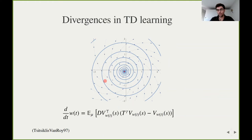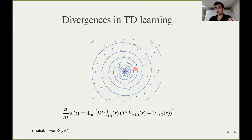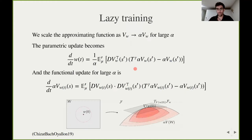In this example the state space has size two, so functions are two-dimensional vectors, and the update of the functional temporal difference learning algorithm is this spiral which contracts to a fixed point. However, if we use a parametric family of approximators that is highly nonlinear, like this spiral, we have to project the update onto the spiral, and in this case the dynamics will diverge — which is obviously a very bad outcome. This unwanted behavior is a result of the interaction between the nonlinearity of the model and the non-gradient nature of the update.